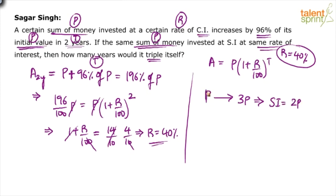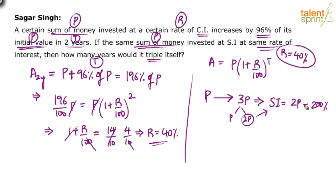You have invested some principal amount. That principal amount should triple — it should become 3P. In that 3P, 1P is the original principal and the remaining 2P is the interest. So the simple interest is 2P. P is always 100%, so 2P equals 200%. Remember this is a simple interest case.